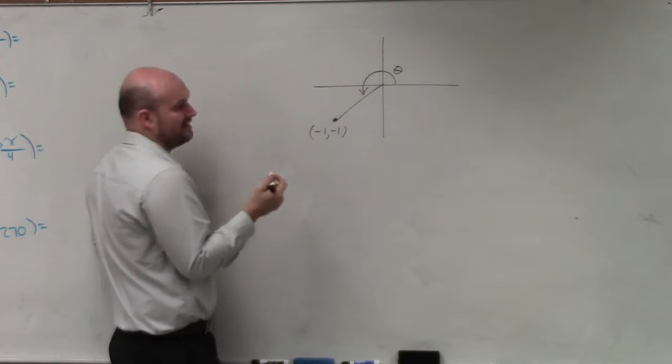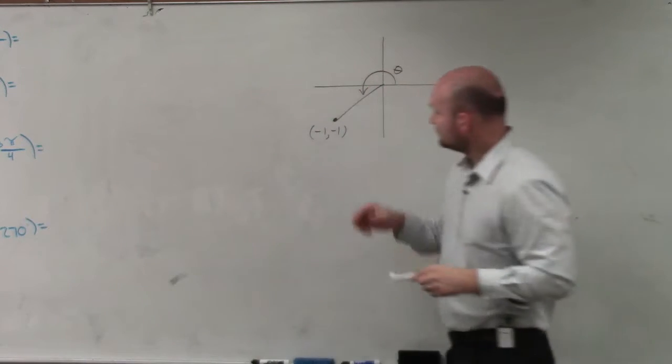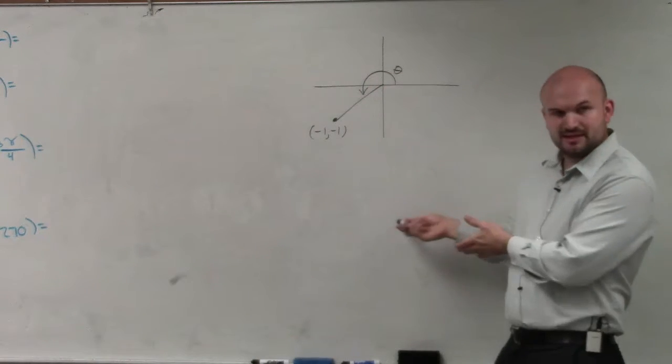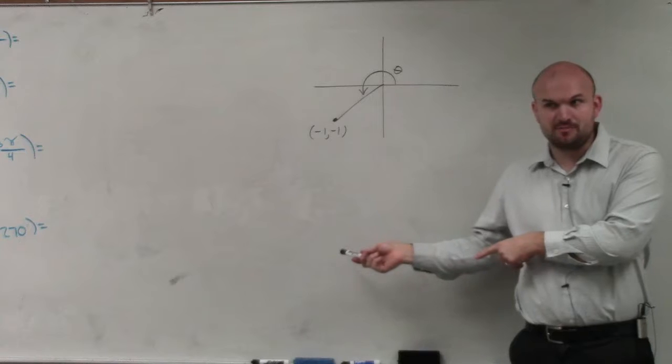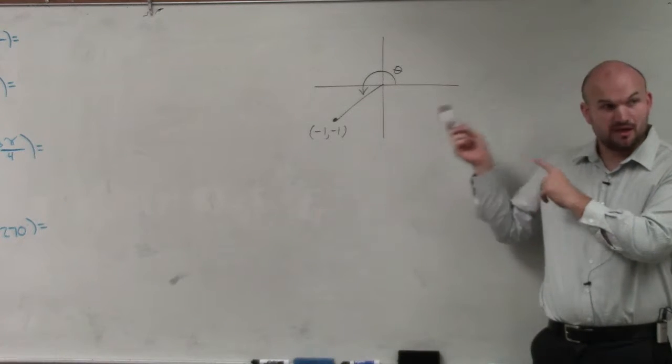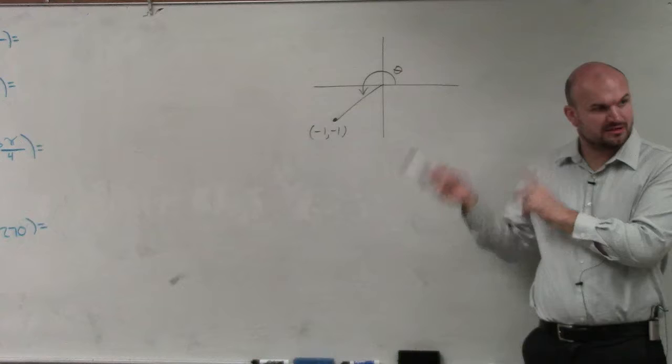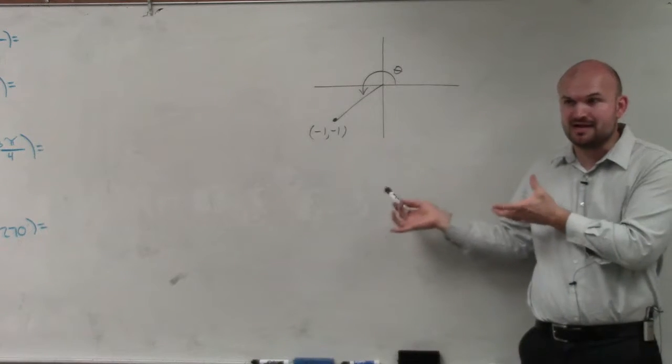Now, there's an important thing here. Remember what we just did in the last problem? Wasn't the reference angle pi over 6 the same as 11 pi over 6? It was just the quadrants are different, but the values are exactly the same.